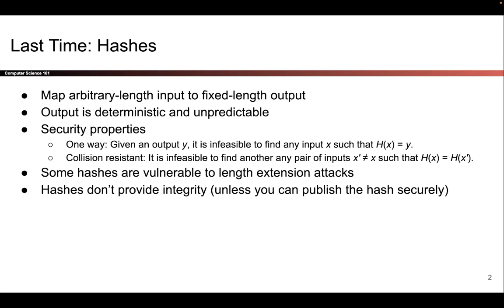As a quick reminder of what we talked about last time: hashes map arbitrary length inputs to fixed length outputs. The output is deterministic but unpredictable, which means that if you change even one bit of the input, the output should look unpredictably different. We talked about two security properties that make a cryptographic hash secure. However, hashes don't have any secret key as input, so they don't provide integrity under our threat model.